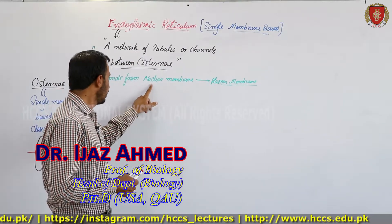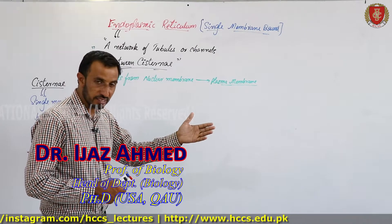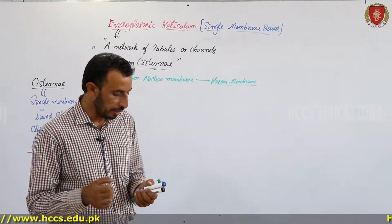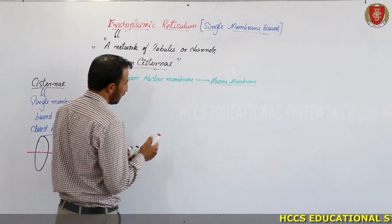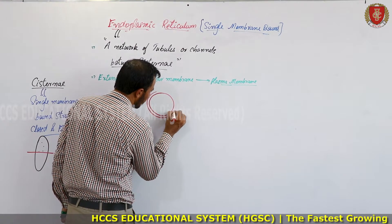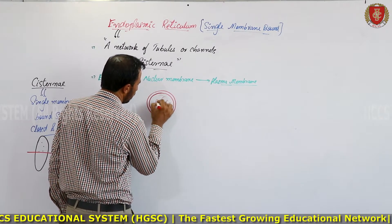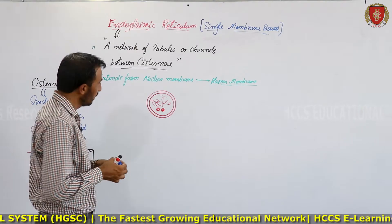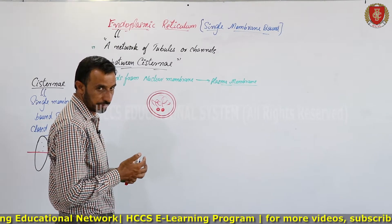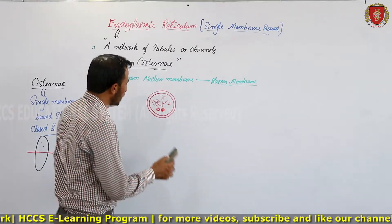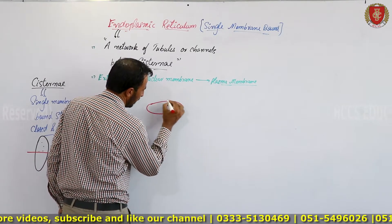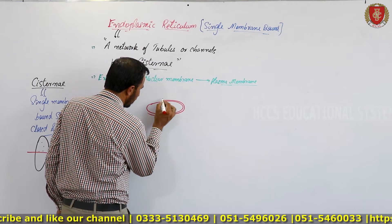Remember that the endoplasmic reticulum extends from the nuclear envelope to the plasma membrane — it is attached to the nuclear membrane on one side and to the plasma membrane on the other. Let me draw a diagram: here is the nucleus with its nuclear envelope and chromatin network, and I'll now show the cisternae in three-dimensional form.